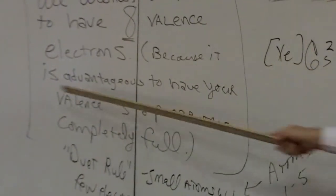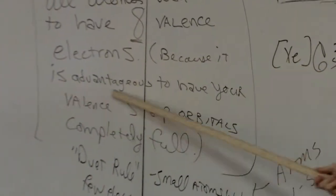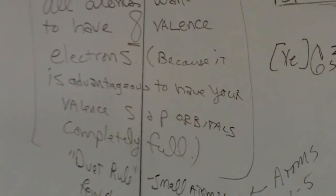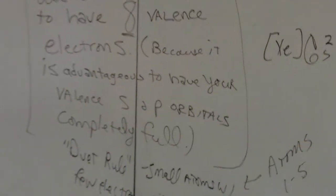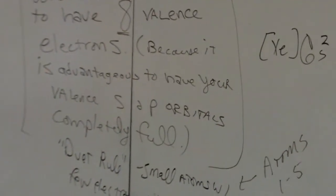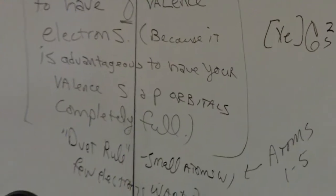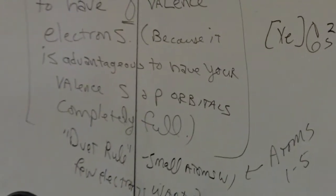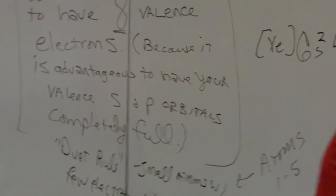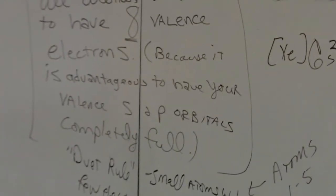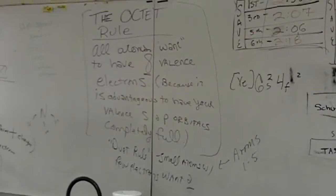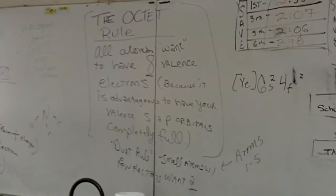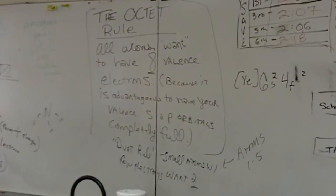It's because it is advantageous to have your valence s and p orbitals completely full. We'll talk about what this means, what it does for us, and what it tells us about various kinds of atoms.